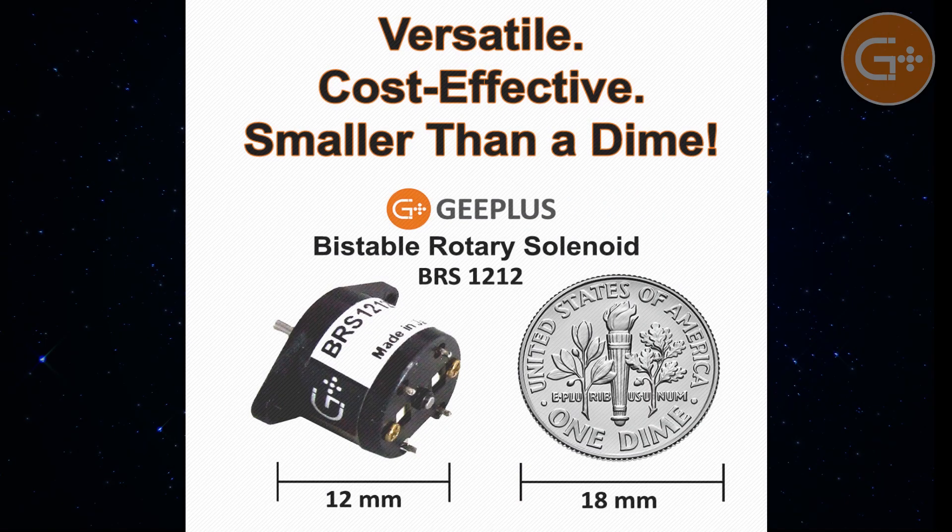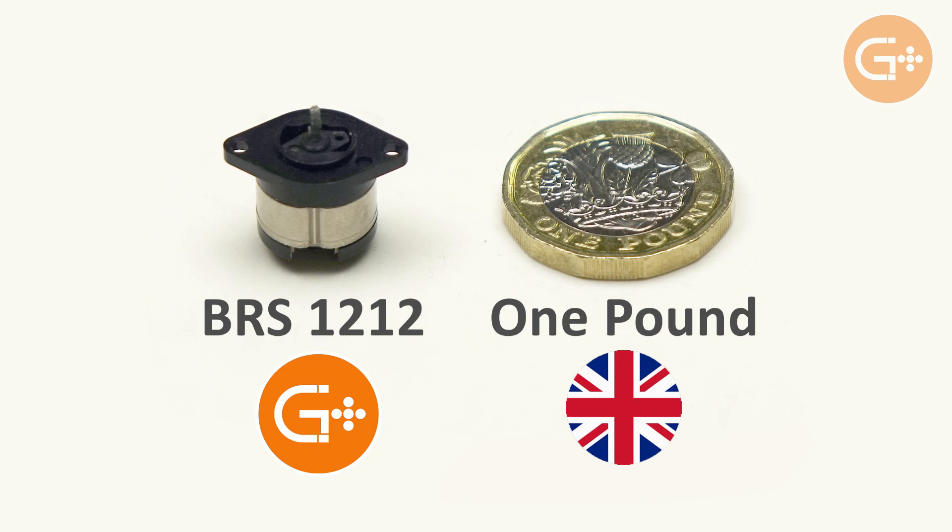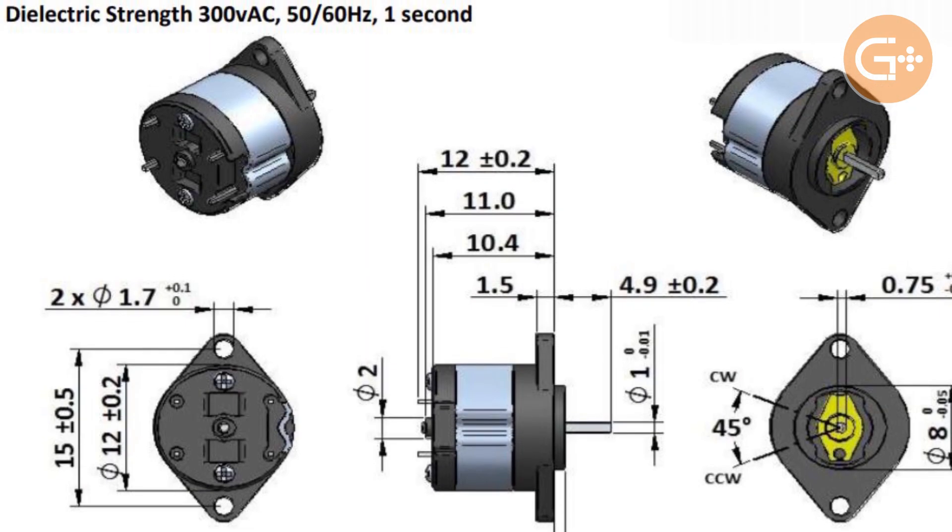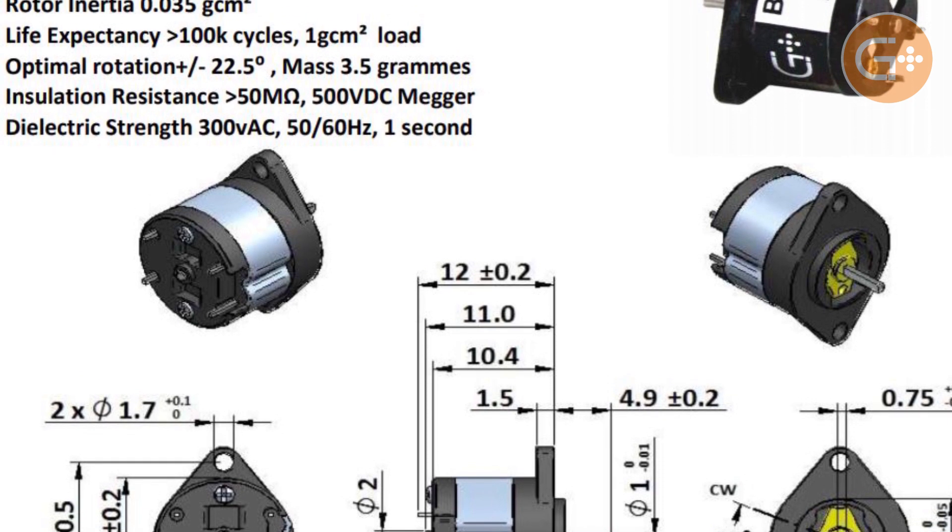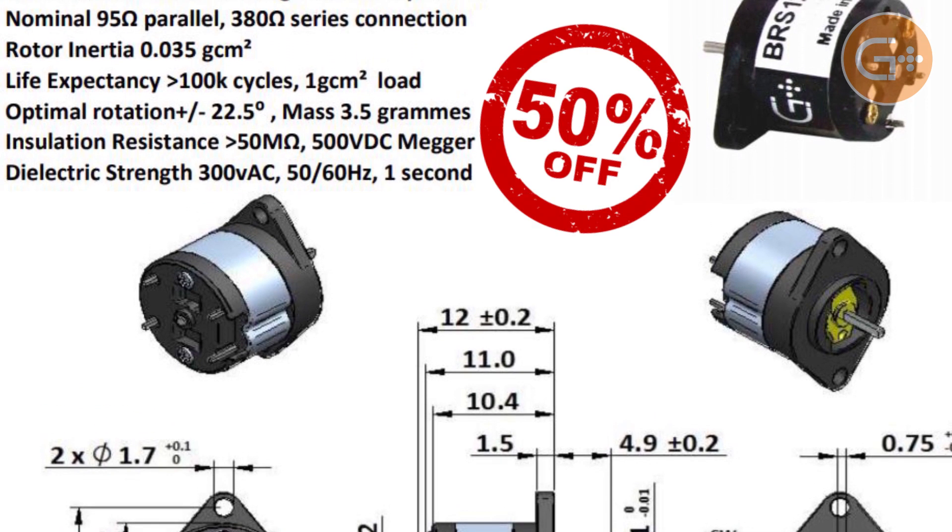Smaller than an American dime, or one British pound if you like, the manufacturing process for this tiny solenoid has been enhanced by G Plus engineers, resulting in cost reductions of up to 50%.